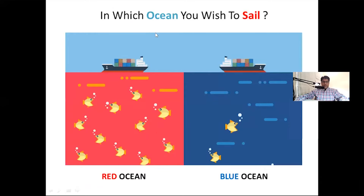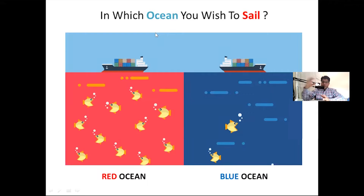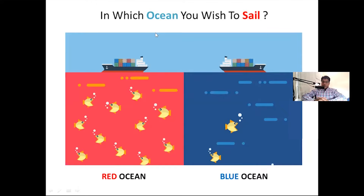Moving further, it is important to understand whether the business model you wish to sell online is viable, and if so, why. If it is not viable, how can you make it viable? It is important to decode in which ocean you wish to sell. This is a metaphor — if you are in the red ocean, there is a lot of competition, a bloodbath. If you're in the blue ocean, competition is less and you can achieve organic growth.